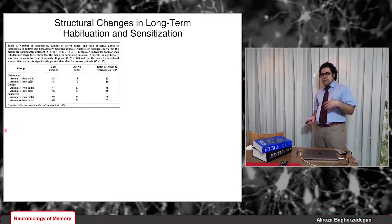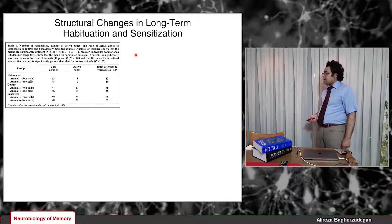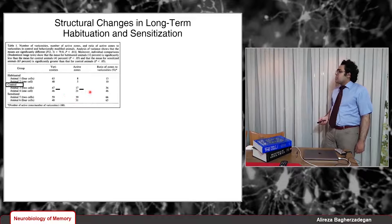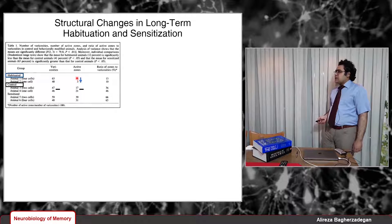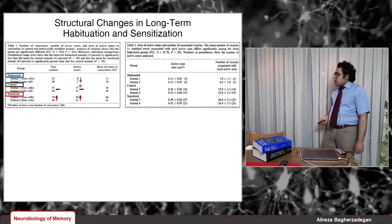These are experimental data proving the structural changes in long-term habituation and sensitization. In the control animal, the number of active zones is, for example, 17 or 21. In habituated animals, it decreases to around 8 or 5 active zones. So the number of active zones in habituated animals is decreased, and the number of active zones in a sensitized animal is increased, as expected.